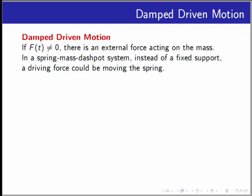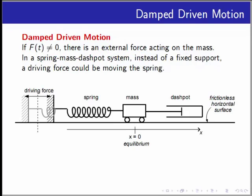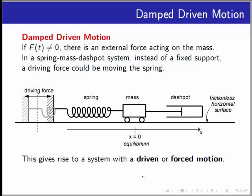Now, let us consider the case when F is not zero. That is, an external force acts on the spring mass dashpot system. So that what we have is called a driven motion with damping. Here is a picture showing the driving force. That means the support, in this case, is no longer fixed, but it moves the entire spring mass dashpot system. In other words, the mass may be set in motion or continue to be in motion due to the driving force.